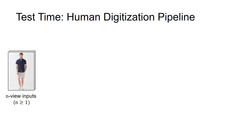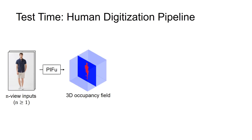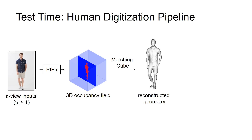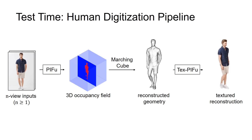At test time, first, PIFU maps an input image to a continuous 3D occupancy field in a pixel-aligned manner. From this, the surface is recovered using the Marching Cubes algorithm. Then, for every point on the reconstructed surface, we use TextPIFU to recover the RGB color.